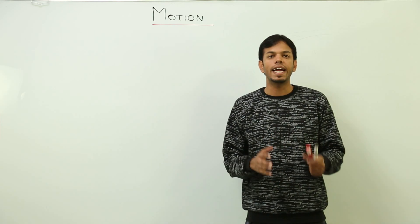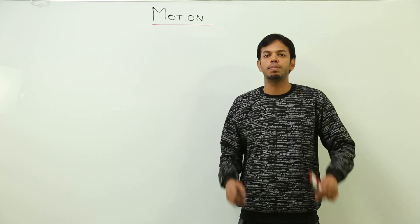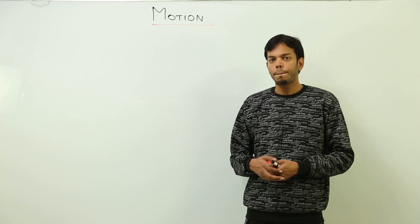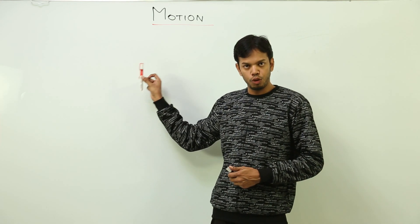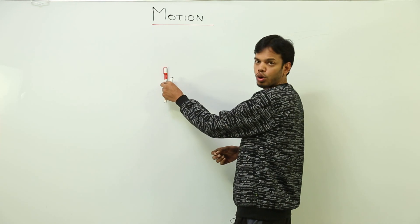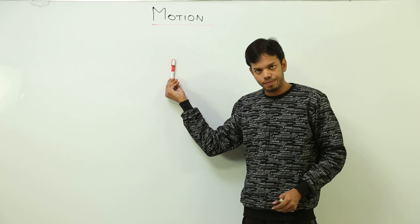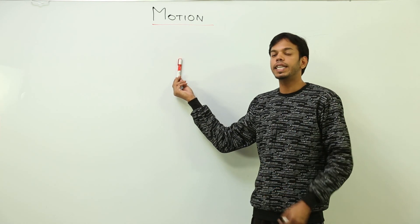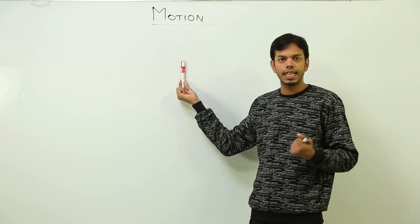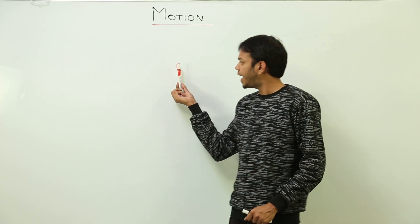Everywhere you will find that motion exists. So what exactly is motion? First, if we have to define that this marker is in motion, what would it mean? Suppose I stick it with double tape on this board - it will be at rest, right? Before defining something in motion, I have to define what exactly is rest. So if I have to define that an object is at rest, what can I say about it?